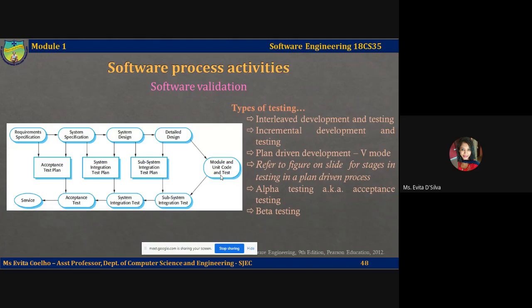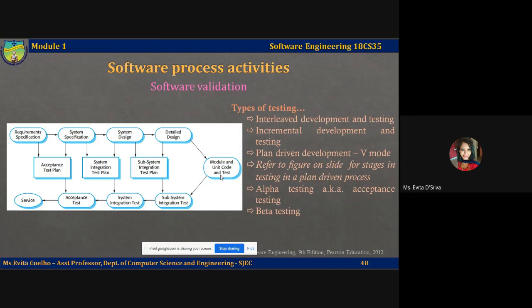Component development and testing processes are normally interleaved. Programmers can make up their own test data and incrementally test the code as and when it is developed. This is economically sensible, as the programmer knows the component and is therefore the best person to generate test cases. When using an incremental approach to development, each increment delivers added system functionality and is integrated with the previous system, with tests based on the requirements for that particular increment. When a plan-driven software process is used, testing may be driven by a set of test plans, with an independent team of testers working with predefined test plans developed from the system specification and design.